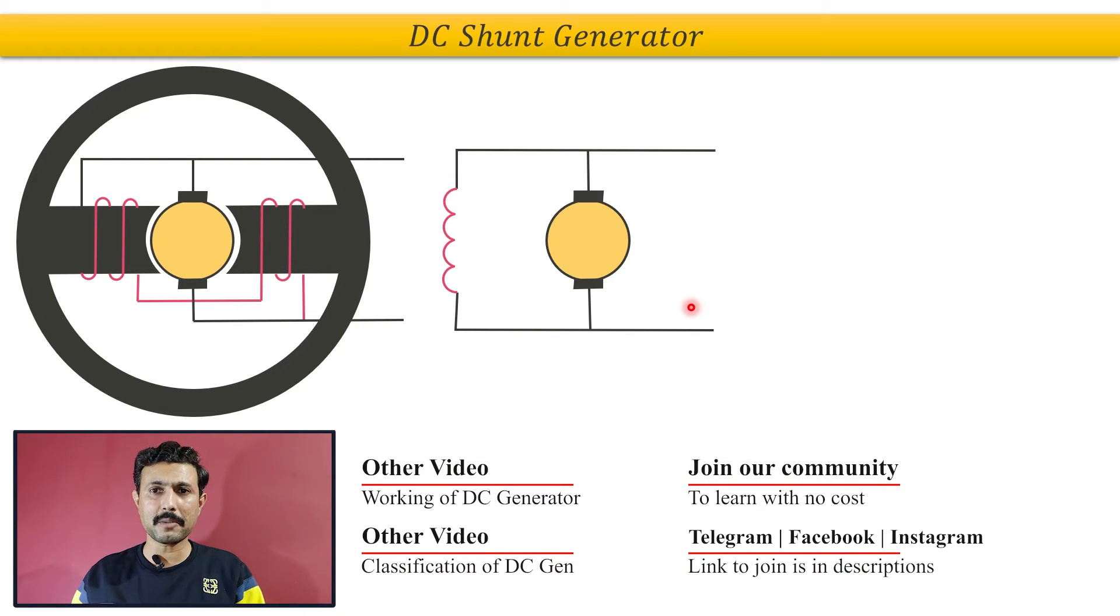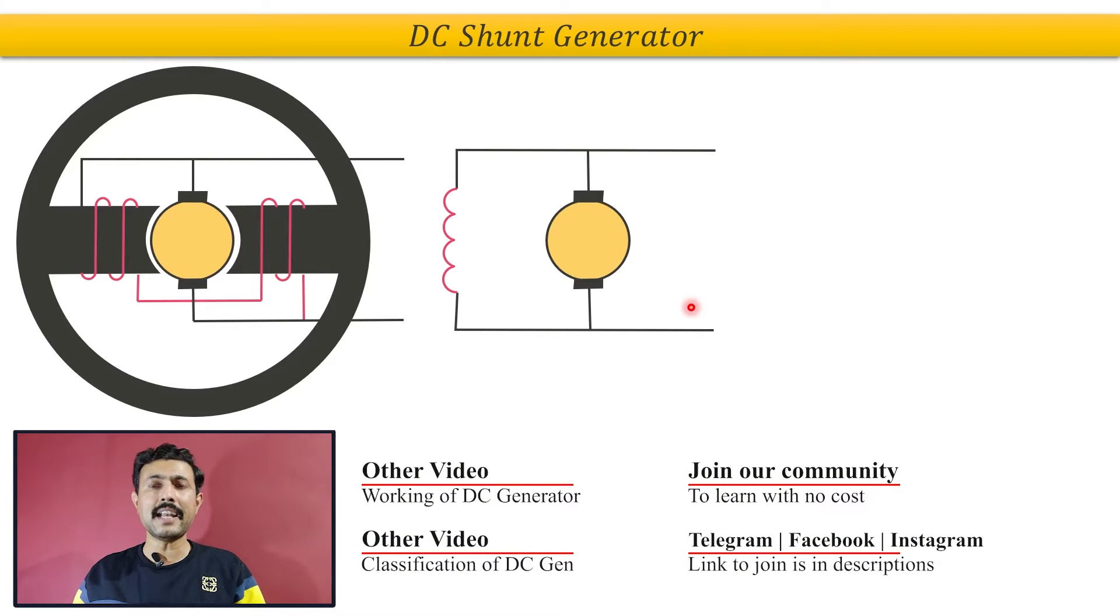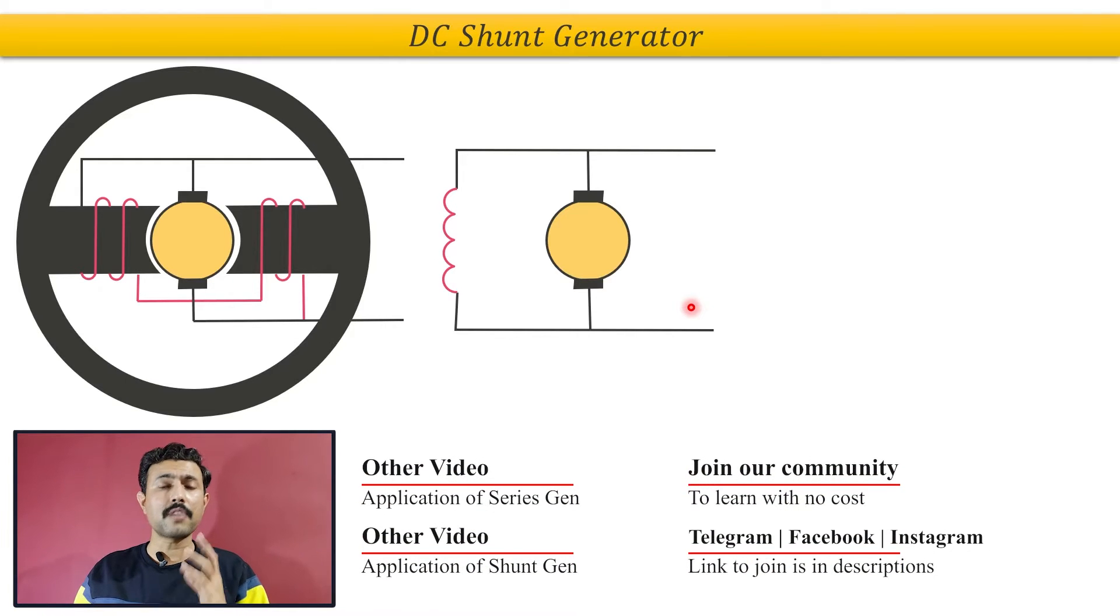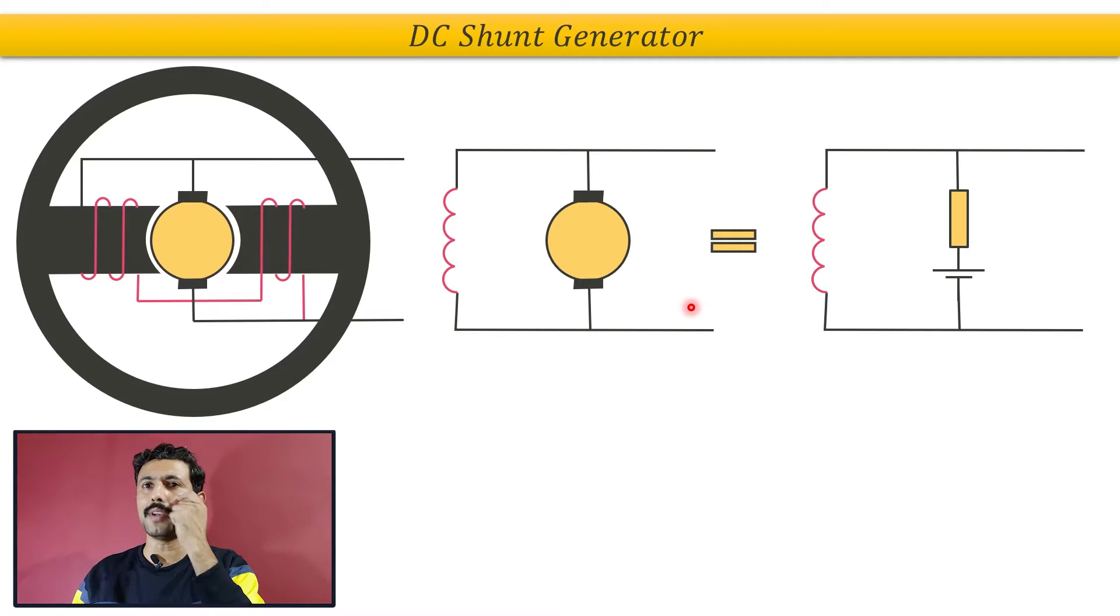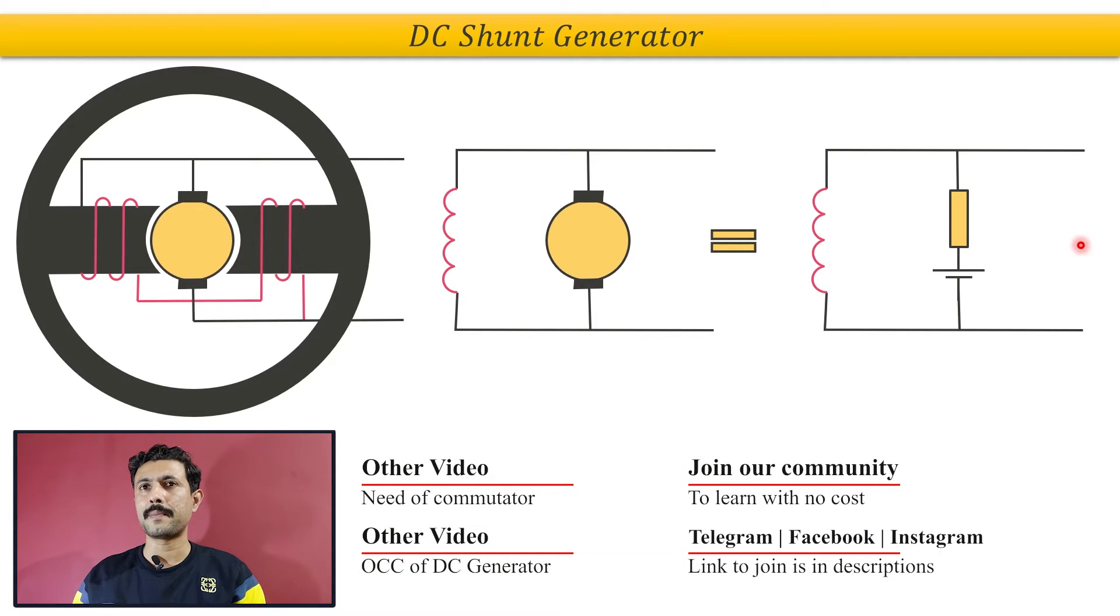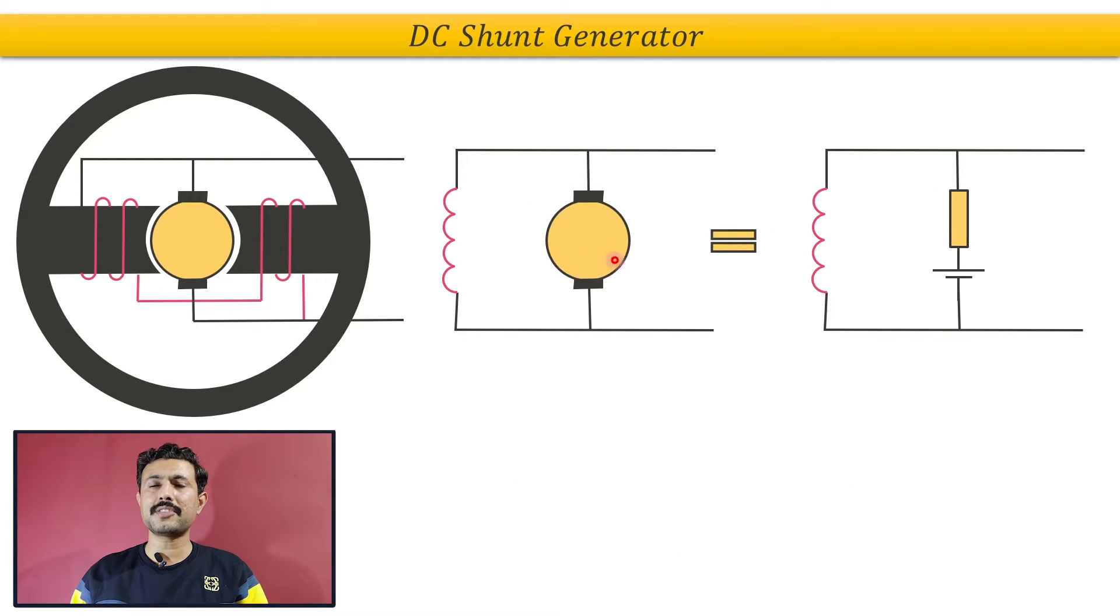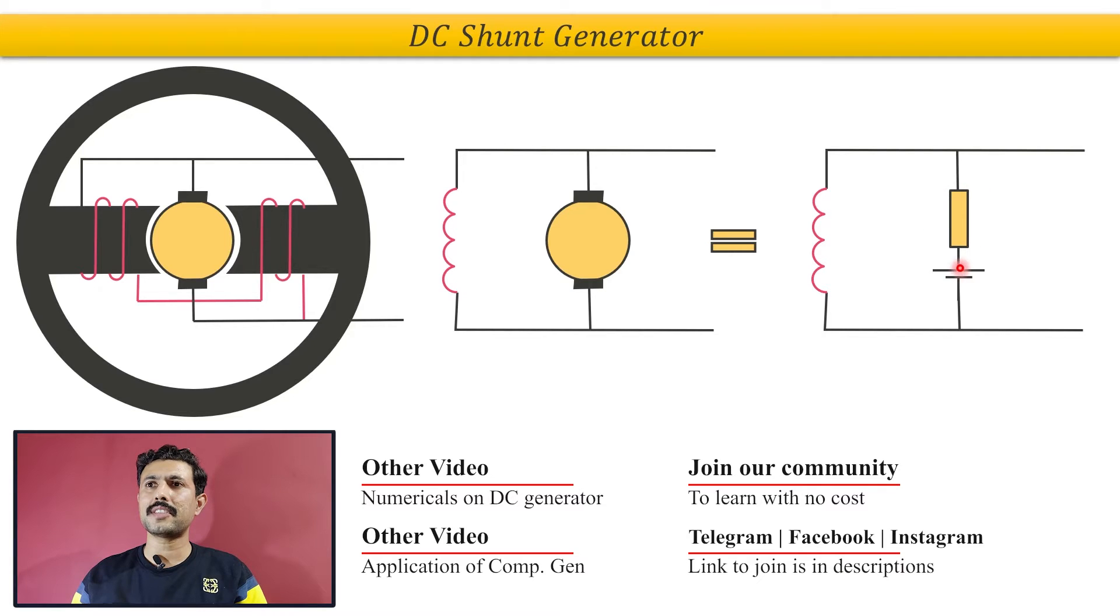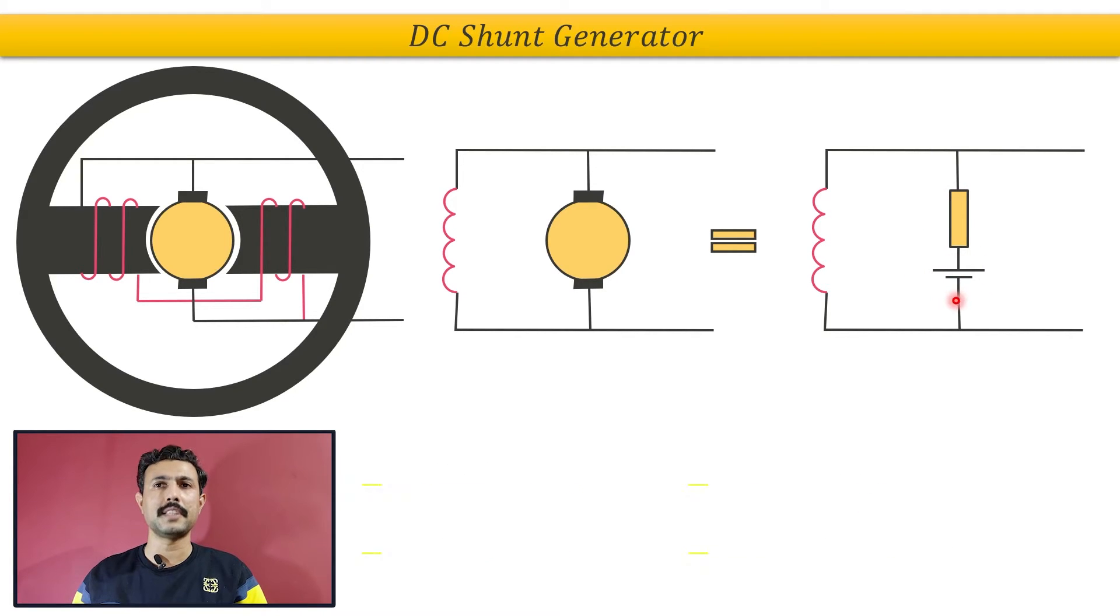So for this purpose, let's get an equivalent circuit for this diagram or for this DC generator. So here we have the equivalent circuit of this DC generator. What we have done here is this armature section is being replaced with the armature resistance and induced EMF E.